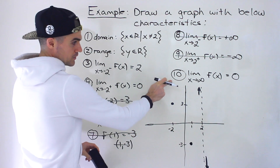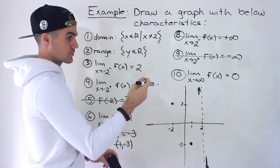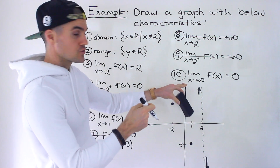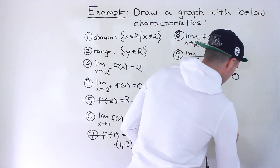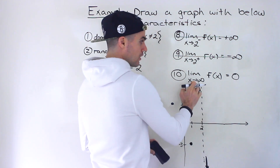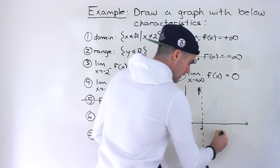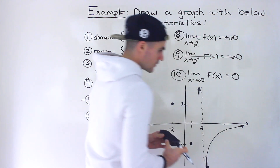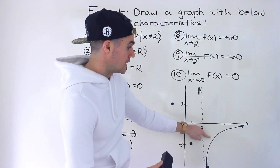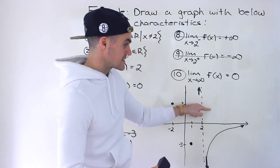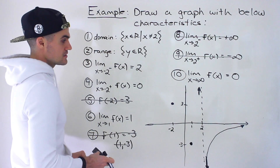Over here we're told the limit as x approaches infinity, f(x) is going to approach 0. Whenever x approaches positive infinity or negative infinity, that represents a horizontal asymptote. So as x gets very large, the function is going towards a y value of 0. Drawing that on the graph could look something like this — the function approaching that y value of 0. It could even cross the x-axis and come back down to approach 0 from the top, but this is an easier way to draw.